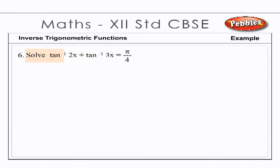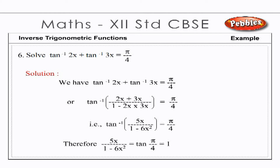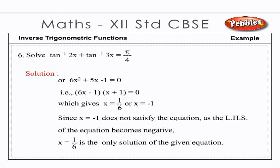Example: Solve tan⁻¹(2x) + tan⁻¹(3x) = π/4. Solution: We have tan⁻¹((2x + 3x)/(1 − 2x·3x)) = π/4, that is tan⁻¹(5x/(1 − 6x²)) = π/4. Therefore 5x/(1 − 6x²) = tan(π/4) = 1, giving 6x² + 5x − 1 = 0, that is (6x − 1)(x + 1) = 0, which gives x = 1/6 or x = −1. Since x = −1 does not satisfy the equation as the LHS becomes negative, x = 1/6 is the only solution.